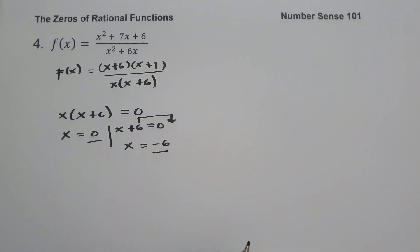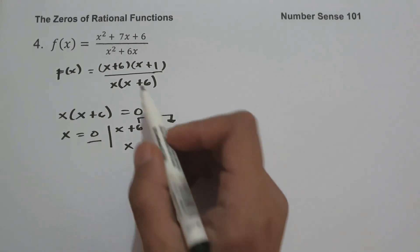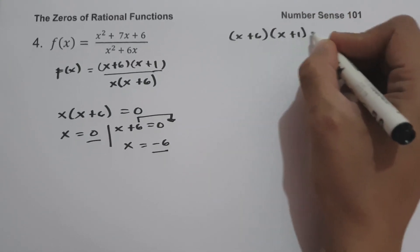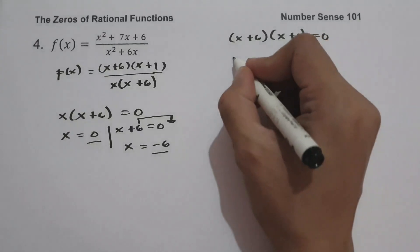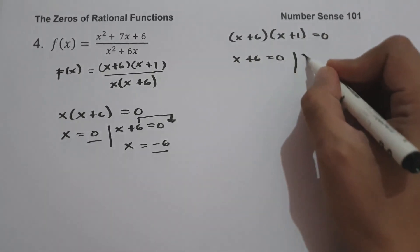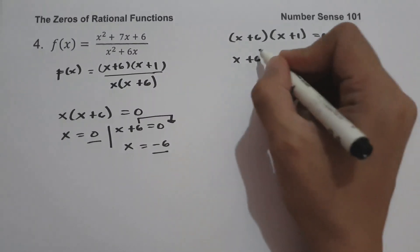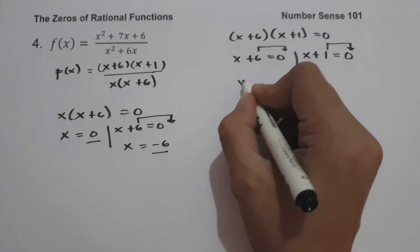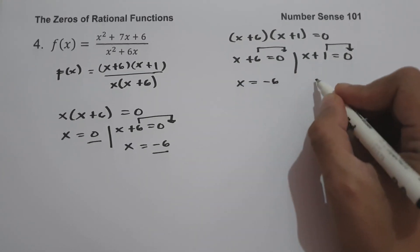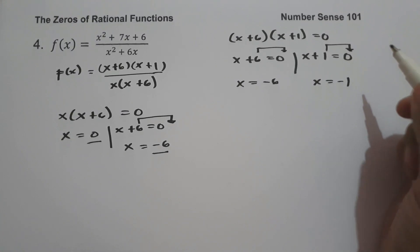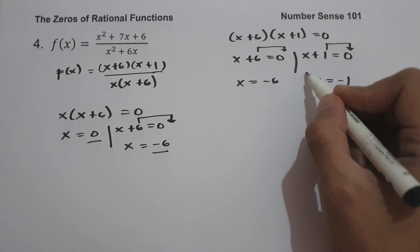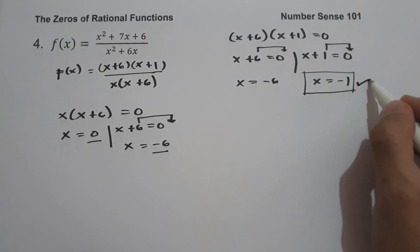Next, we set the numerator equal to 0: x plus 6 times x plus 1 equals 0. This gives x equals negative 6 and x equals negative 1. Since negative 6 is a restricted value, therefore the zero of the function is x equals negative 1. And this will be our answer.